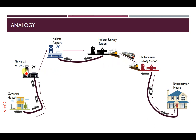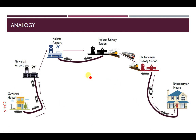From Guwahati airport I travel to Kolkata airport, then from Kolkata airport I take a taxi to Kolkata railway station, from Kolkata railway station I travel to Brunesor railway station, and again I pick up a taxi to reach the Brunesor house. This method was designed by the agent when I asked him to book tickets from Guwahati to Brunesor.